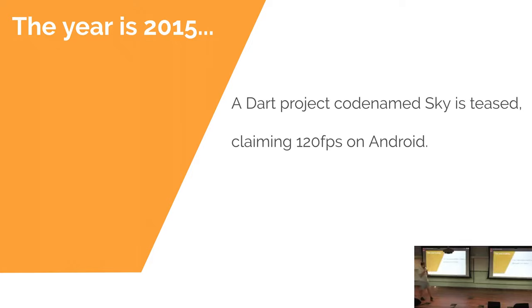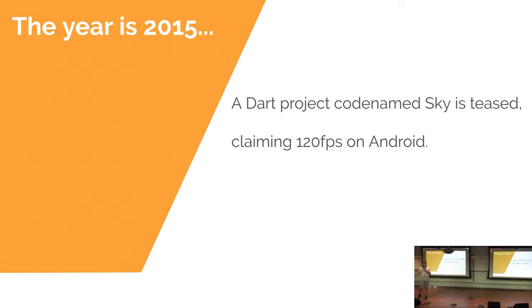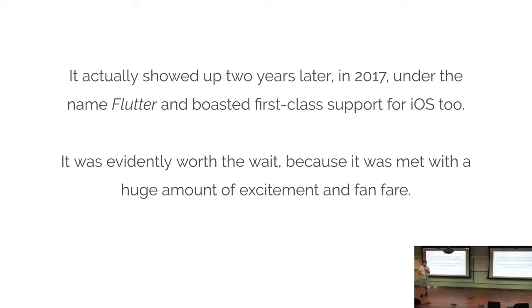If we rewind again to 2015, at this fairly obscure Dart conference which probably nobody in this room attended, Google announced or teased a project codenamed Sky, claiming that Dart was so fast it compiles to native and can run 120 frames per second on Android — really impressive on the Android devices of 2015. Two years later it materialized, was announced as Flutter, and came out the door with first-class support for both platforms, delivering on a lot of things that React Native maybe didn't have in the early days.